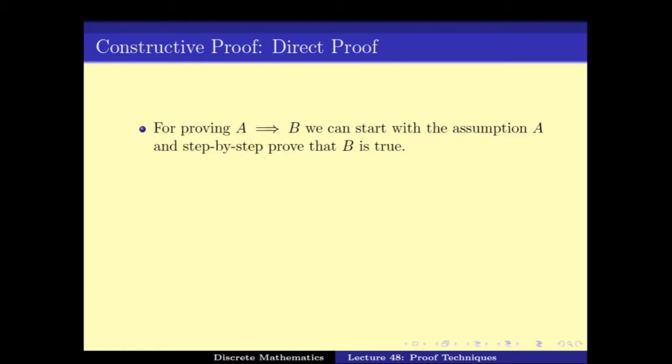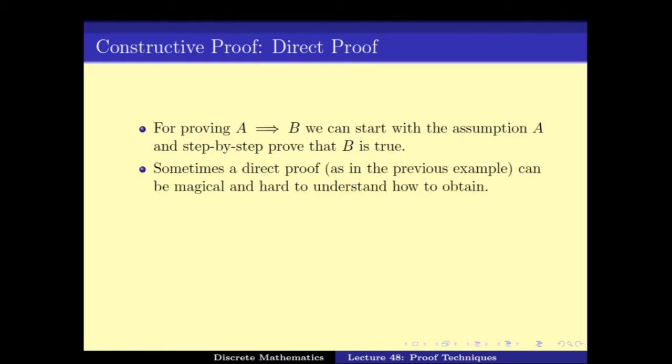After you have simplified this problem by using these various techniques, the constructive proof technique has two cases. Number one is the direct proof where you start from A and slowly end up solving B. Sometimes the direct proof can be magical and hard to understand. And a simpler proof technique might be to go from the backward, as to if you have to prove B then what is necessary and what is necessary and so on. So, we saw that the direct proof technique either from going from A to B or from B to A, both can be handy at times.